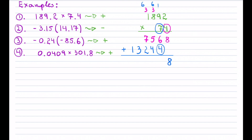Now we add up the results: 8; 6 plus 4 is 10, carry the 1; 1 plus 5 plus 4 is 10, carry the 1; 1 plus 7 plus 2 is 10, carry the 1; then we get 4 and 1. Once you finish the multiplication and addition, don't forget to reinsert the decimals — count the decimal places: one in the first number and one in the second gives two total, so the final answer has two decimal places.